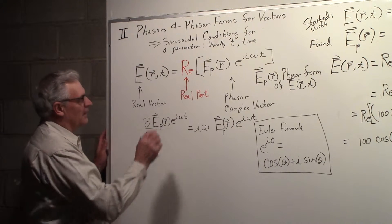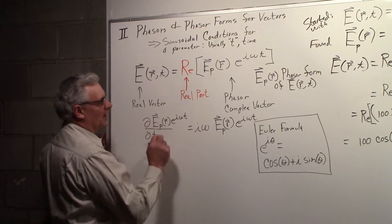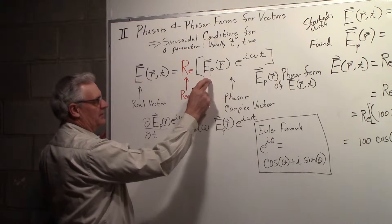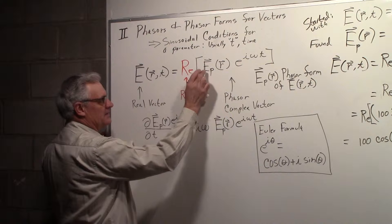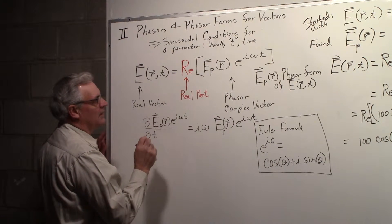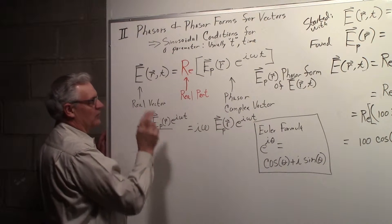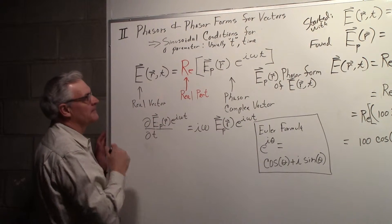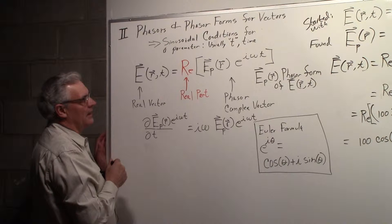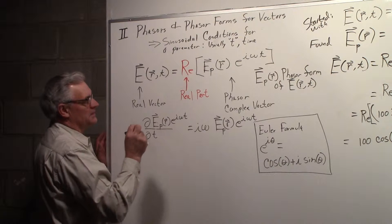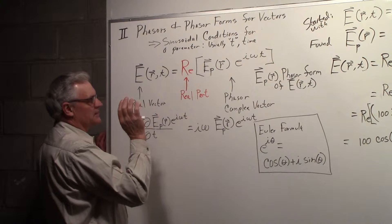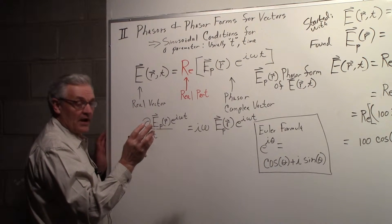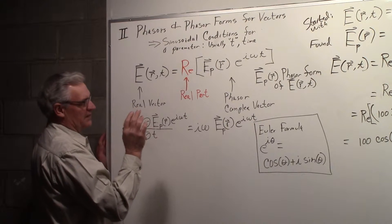We can write that as the real part of a phasor or a complex vector, which we show as this vector E with a subscript p for representing the phasor form of the vector, and an e^(iωt). This works for sinusoidal conditions for any parameter, but the parameter usually exhibiting the sinusoidal conditions is time.